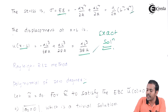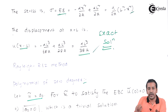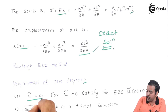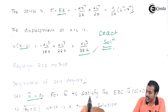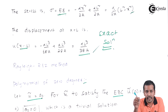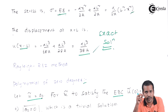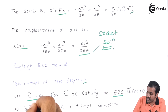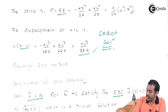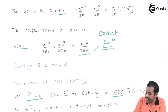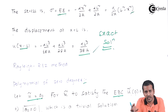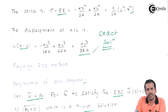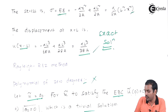First, let us take a polynomial of zero degree — a constant trial function: u-tilde = a₀. For the trial function to satisfy the essential boundary condition u-tilde(0) = 0, we need a₀ = 0, which is a trivial solution. So polynomial of zero degree is not useful.